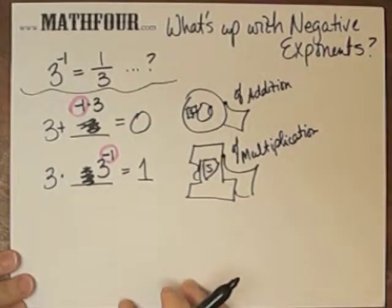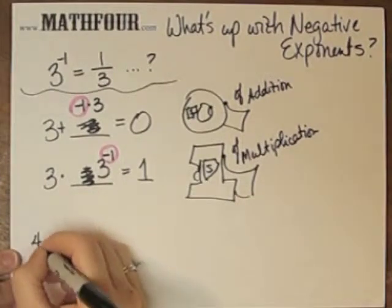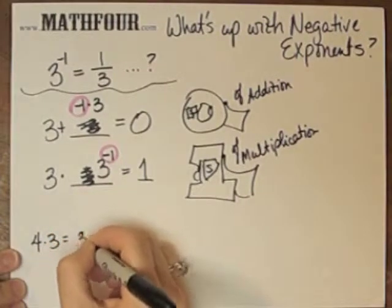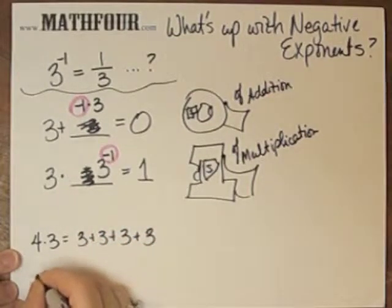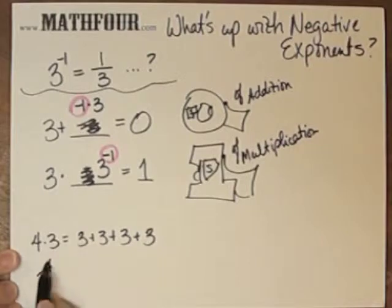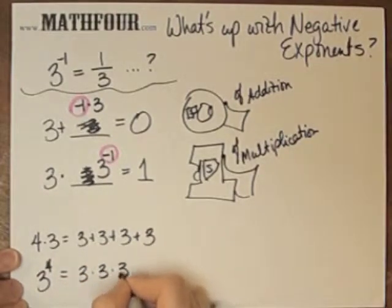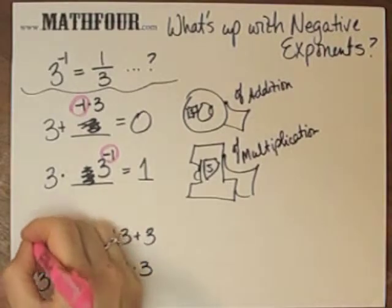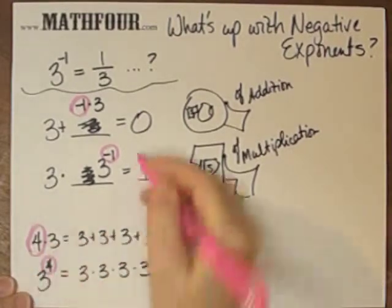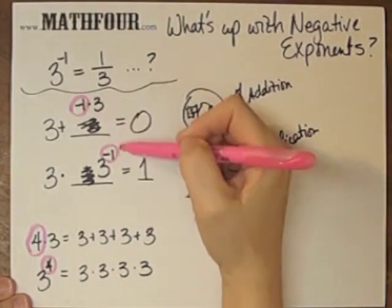Back to my example for the previous video where I had 4 times 3 means 4 copies of 3 added together. Notice the positioning of this guy and these guys. Instead of 4, I'm using negative 1.